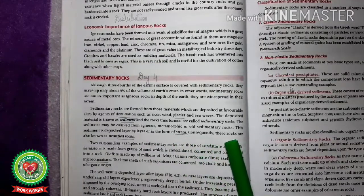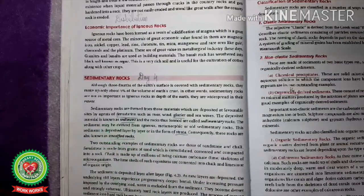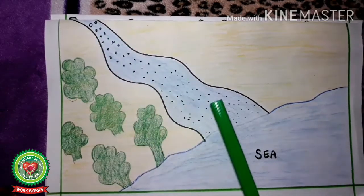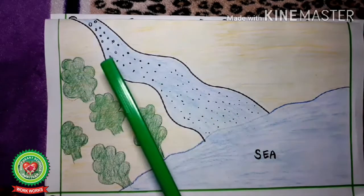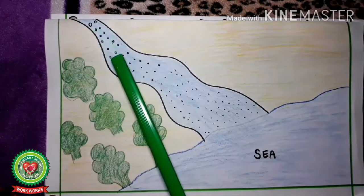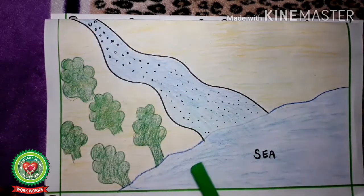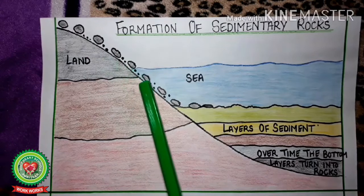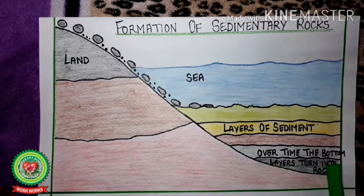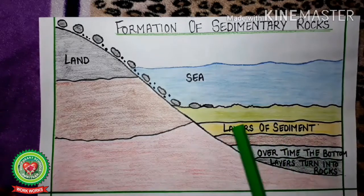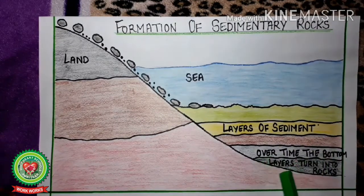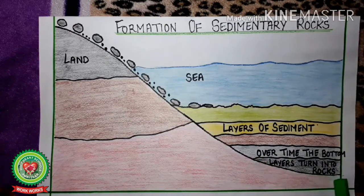Consequently, these rocks are also known as stratified rocks — meaning they are formed in layers. In this picture we can see a river moving from land to sea, acting as an agent of denudation or erosion. It carries large amounts of sediment and deposits them on the seabed. The sediments from the land are deposited on the ocean floor layer by layer. The lowest layer is compressed by the upper layers and is turned into hard rock.